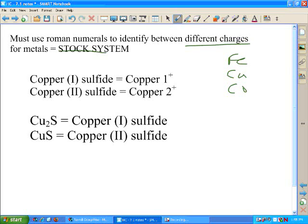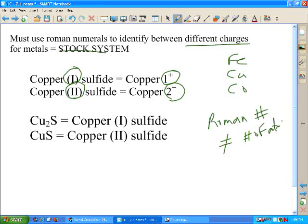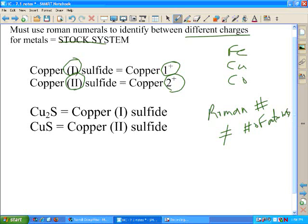The stock system is a Roman numeral that helps us determine the charge. So, if we see copper Roman numeral one sulfide, that just means it's copper that has a plus one charge. If we see copper Roman numeral two sulfide, that means it has a plus two charge. It does not mean, the Roman numerals do not equal the number of atoms.